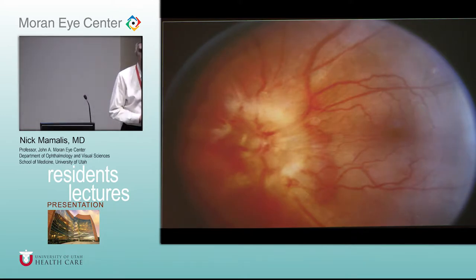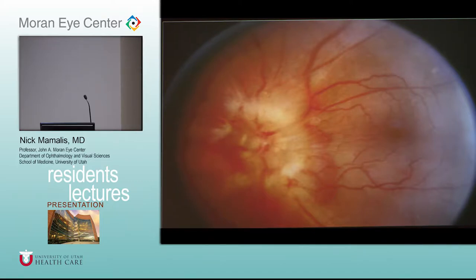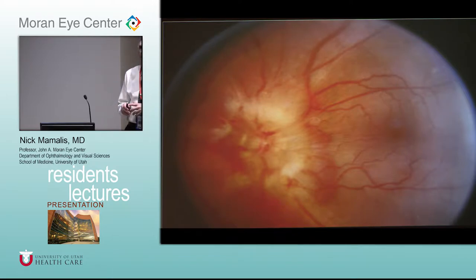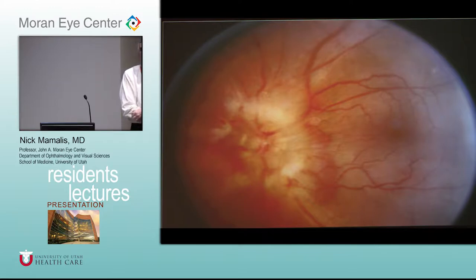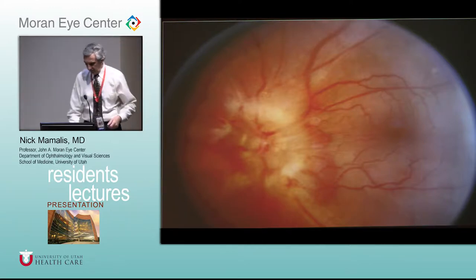This is a severe hypertensive retinopathy where you can actually get frank papilledema from severe hypertension. This patient came to clinic when I was a resident. We were going to work them up for a CT scan to figure out why they had papilledema, and a medical student said, 'Did anyone check their blood pressure?' We pulled out the sphygmomanometer and it was 210 over 110. This patient had a hypertensive crisis — sent immediately to the ER. This is severe grade five hypertensive retinopathy.